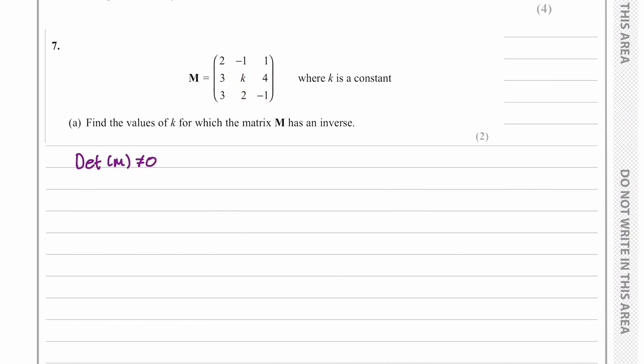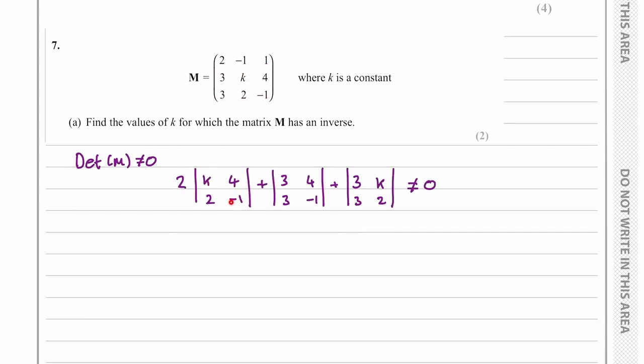So we'll multiply the k by the negative one, take away the four times the two, then we'll have three times negative one take away the four times the three and the six take away the three k. We can simplify each of these and then we can collect the like terms.